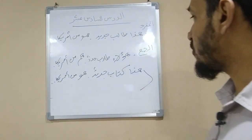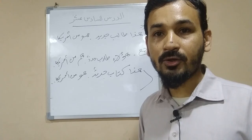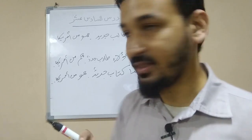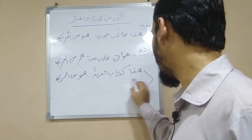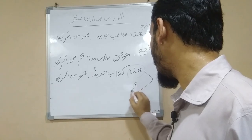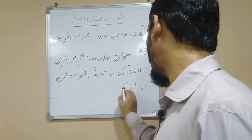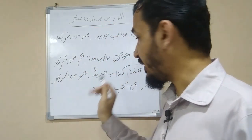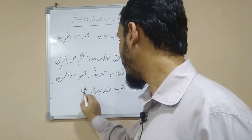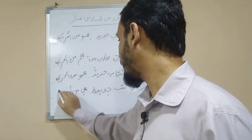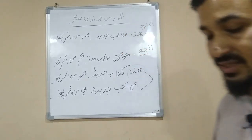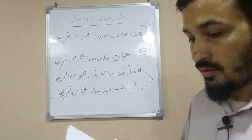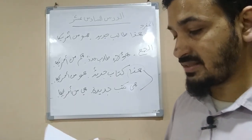Look — 'haadha kitabun jadid, huwa min Amerika' — this is a new book, it is from America. Now it is singular; you have to change it to plural. You know that the plural of kitab is kutub, and kutub is a broken plural — al-jam'u al-mukassar. So first, 'hadha' becomes 'hadhihi.' Then: 'hadhihi kutubun jadida, wa hiya min Amerika' — these are new books and they are from America.